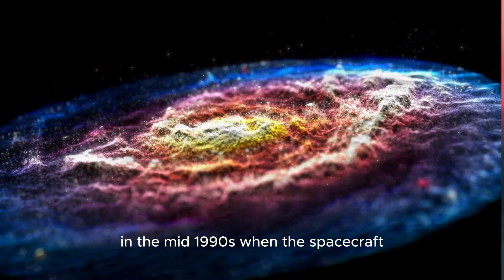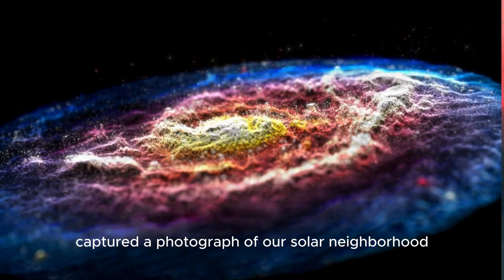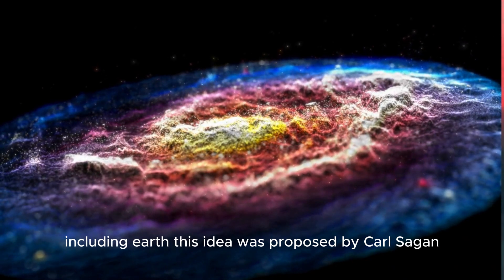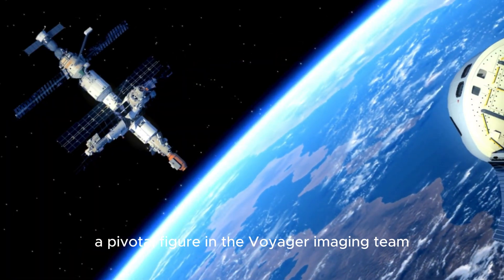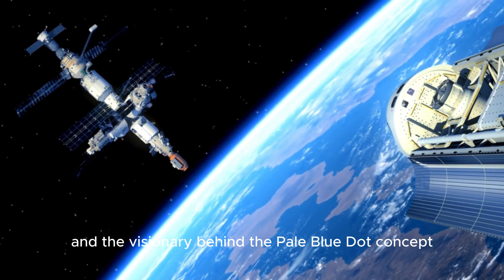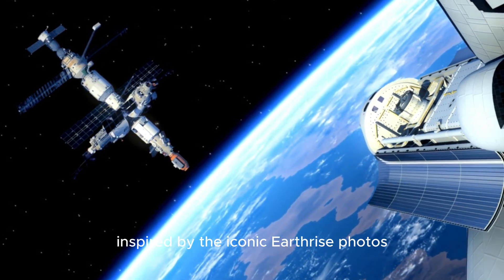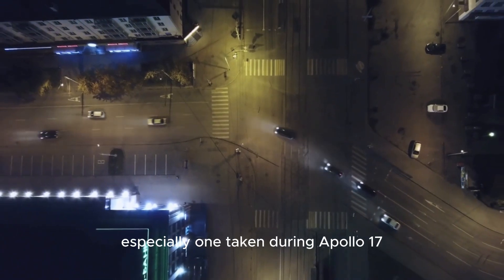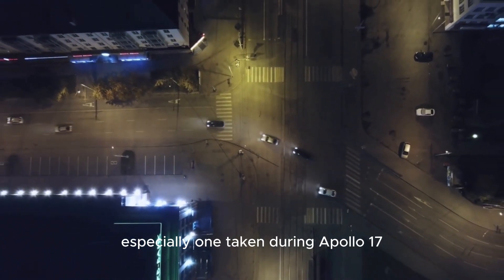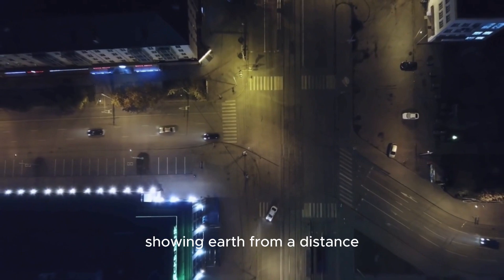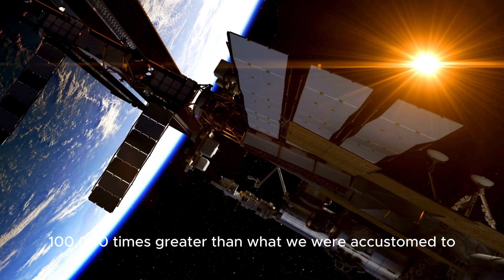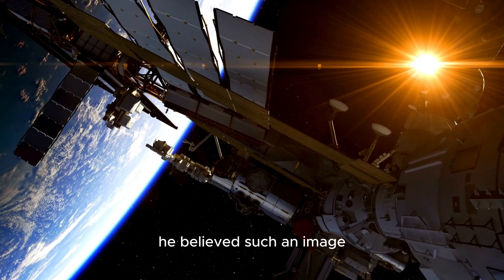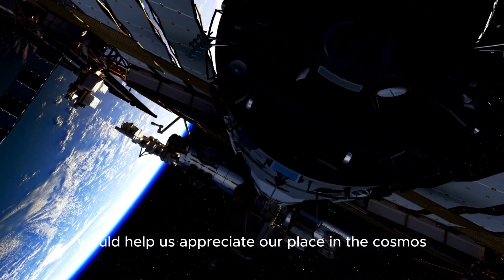The Voyager mission culminated in a poignant farewell to our solar system in the mid-1990s when the spacecraft captured a photograph of our solar neighborhood, including Earth. This idea was proposed by Carl Sagan, a pivotal figure in the Voyager imaging team and the visionary behind the pale blue dot concept. Inspired by the iconic Earthrise photos from the Apollo program, especially one taken during Apollo 17, Sagan aimed to provide a fresh perspective, showing Earth from a distance one hundred thousand times greater than what we were accustomed to.